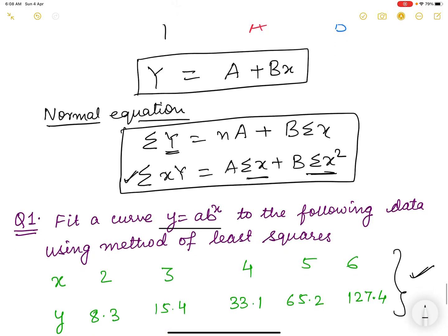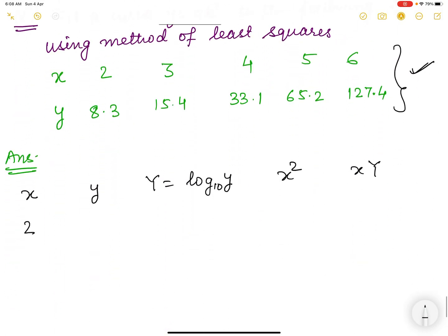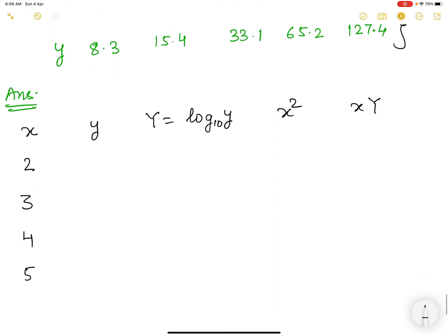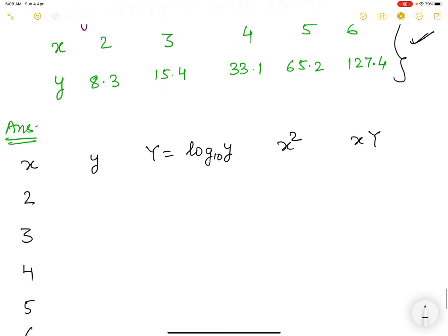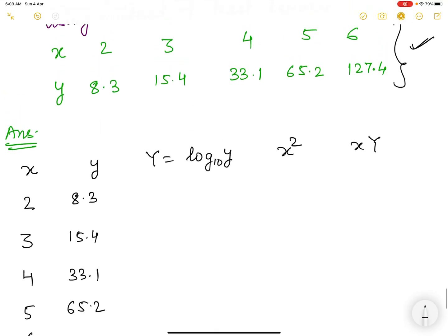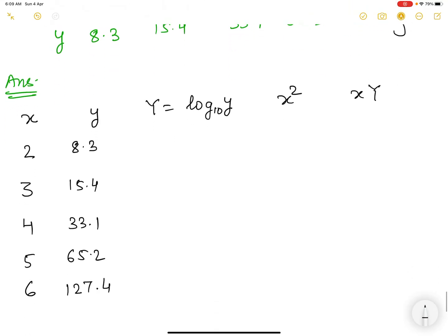Let us see the values of x which is given. It is 2, 3, 4, 5, and 6. The corresponding value of y is 8.3, 15.4, 33.1, 65.2, and 127.4. Let us take the log. You may use your calculator. You have to find the log to the base 10. So we found it to be this.